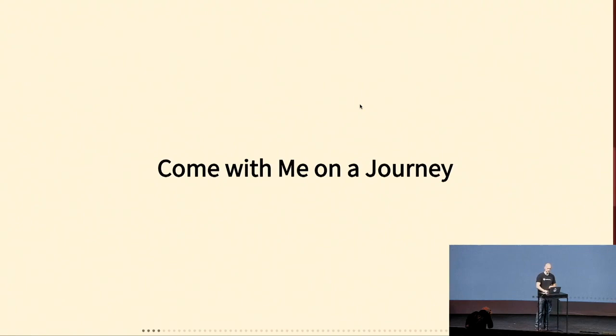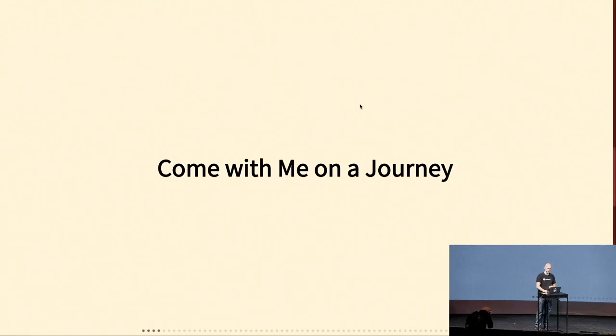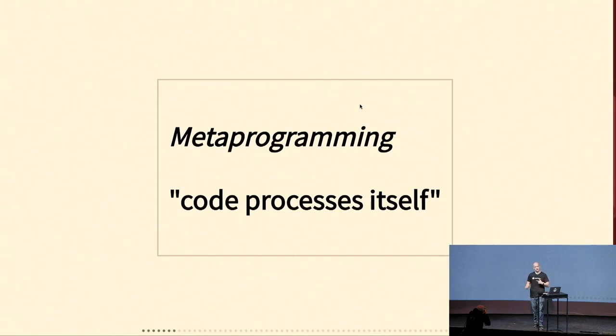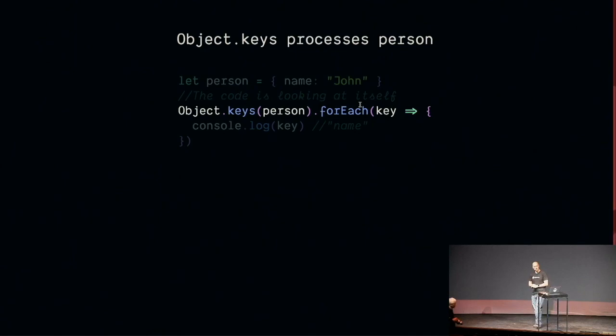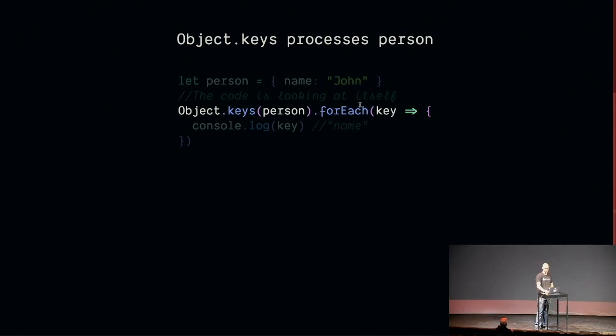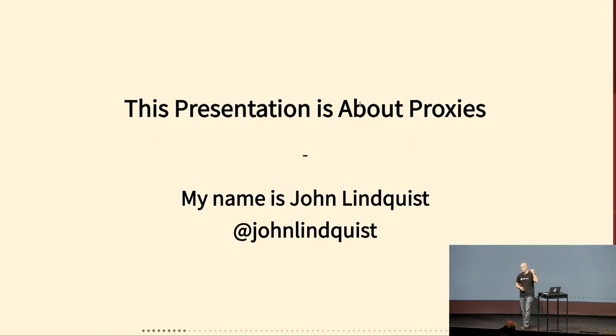Programming is where code processes user inputs — you type on your keyboard, you click a mouse, you talk to your computer, and the computer code processes that and does something with it. Metaprogramming is where the code processes itself. A familiar example of that is Object.keys — it looks at the object, processes it, and finds the keys on it. That's code processing itself. This presentation is about proxies, and proxies are a type of metaprogramming.